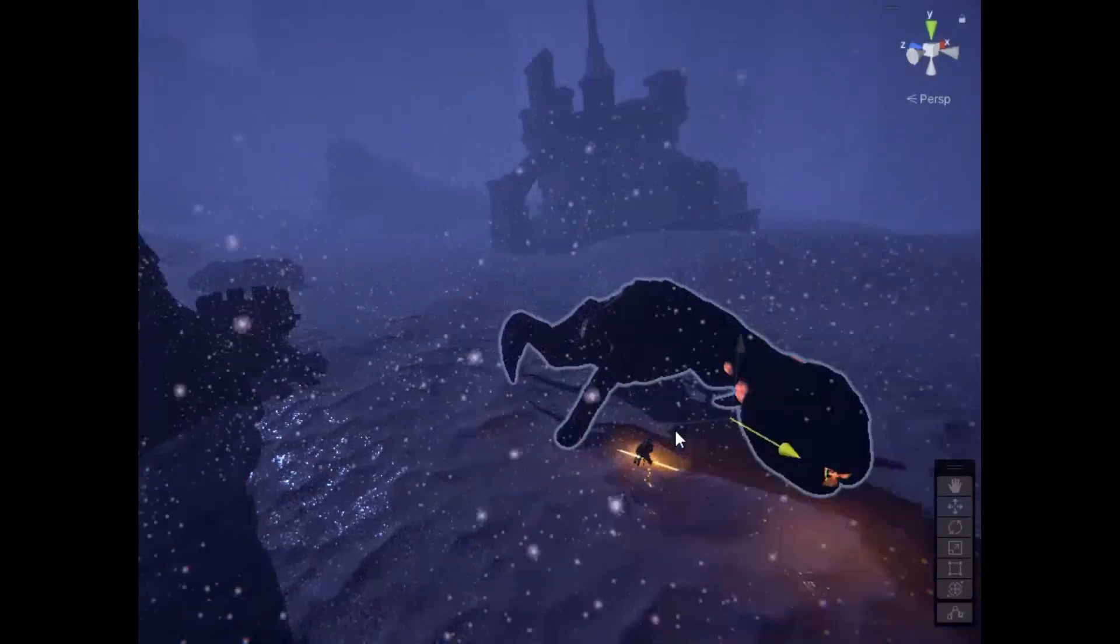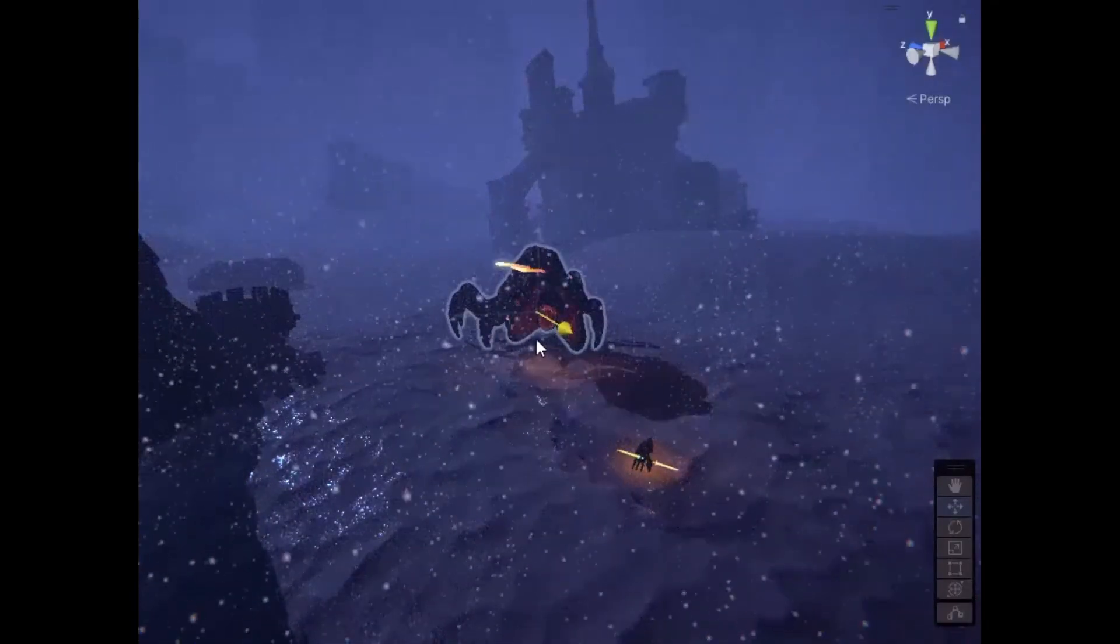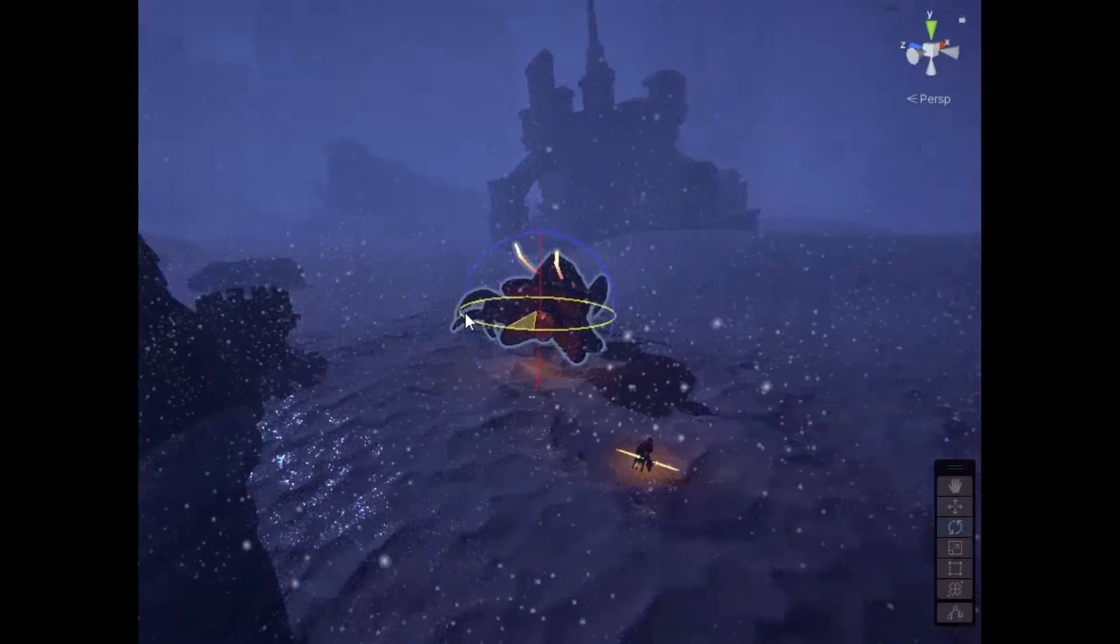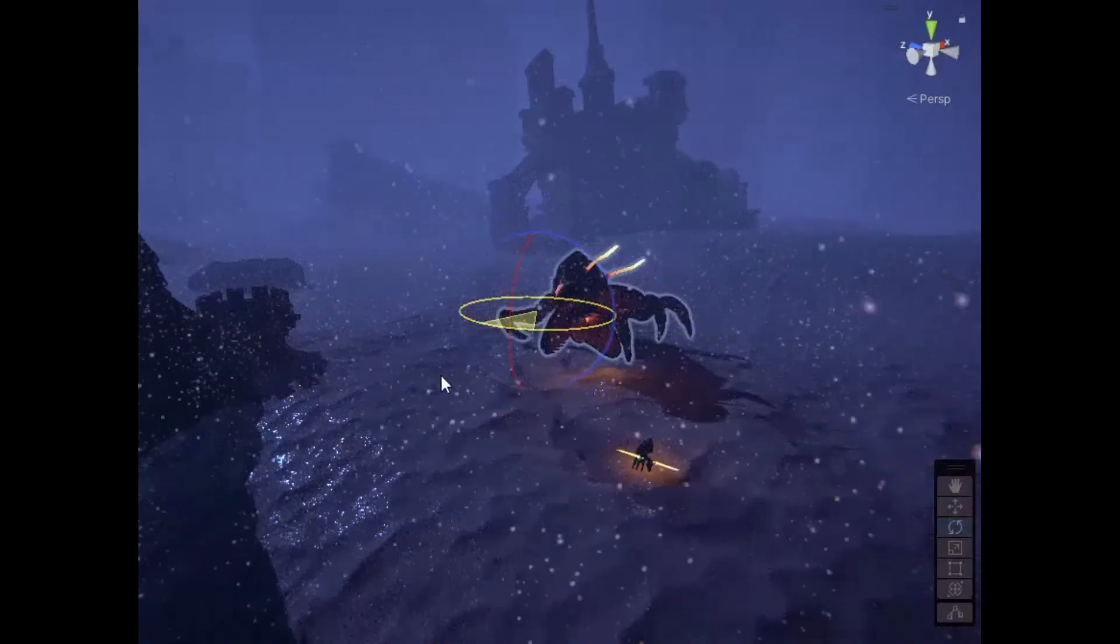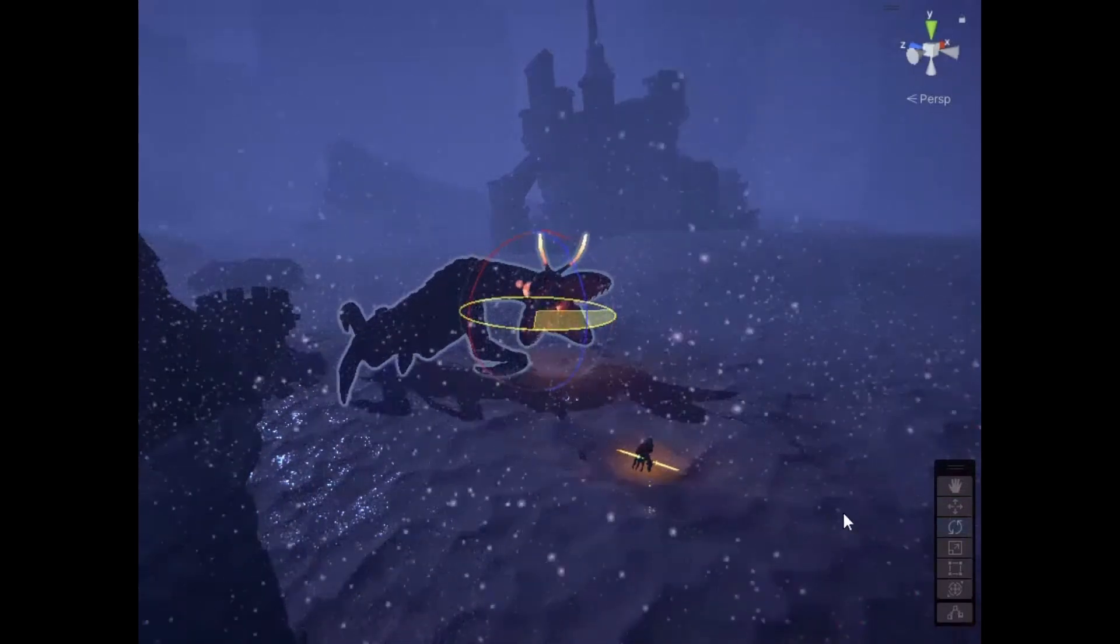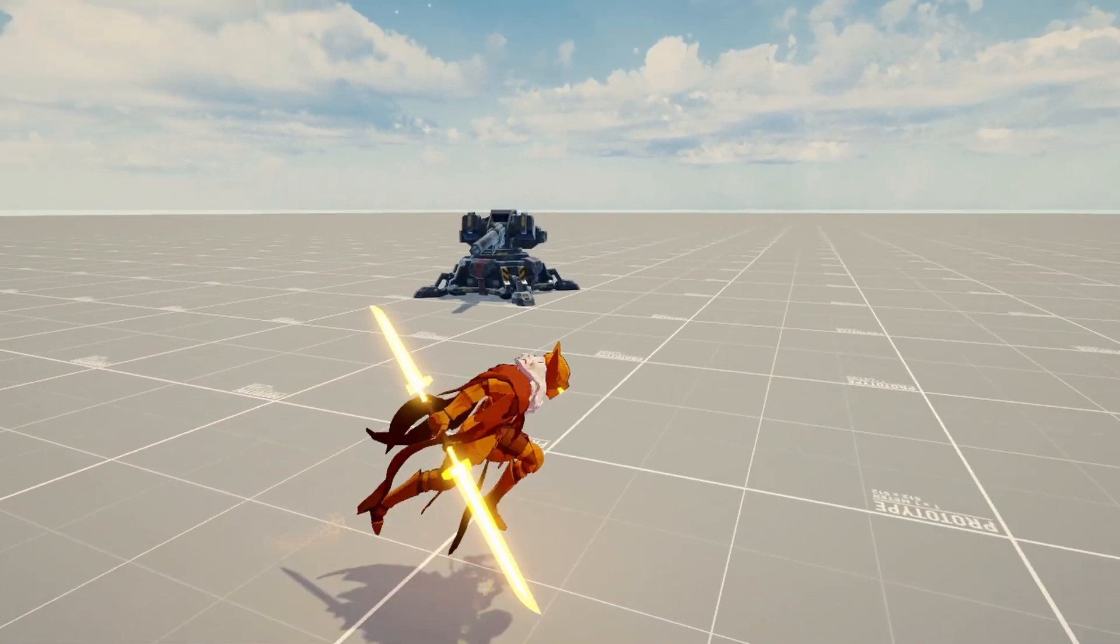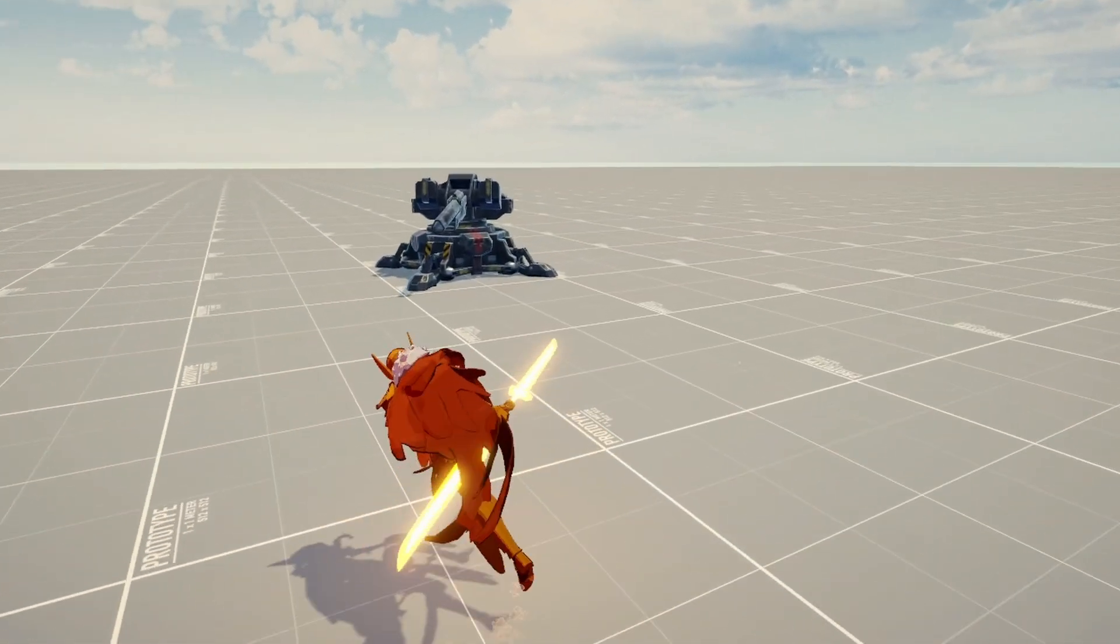Similar to the legs setup, the rest of the creature uses the same principles. The head will turn to look at the target, and often this extends down to the spine and chest slightly. If the enemy is a turret, this may be the only procedural animation it needs.